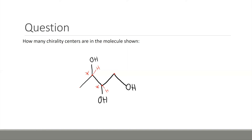What about this third carbon with an OH group? It has an OH and one hydrogen, but it also has another hydrogen. Because it has two hydrogens, there are not four different things attached to it, so it is not a chirality center. Therefore, this molecule has two chirality centers in total.